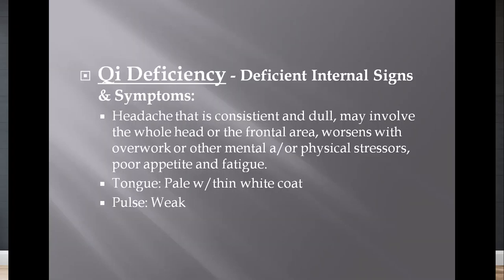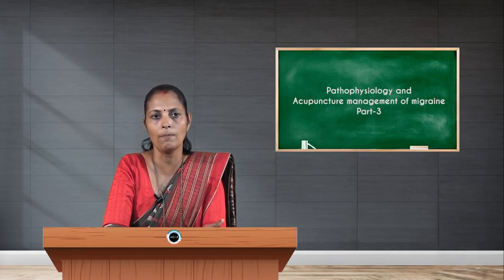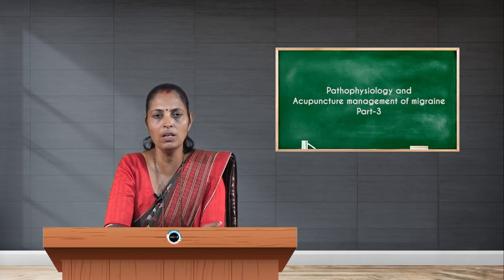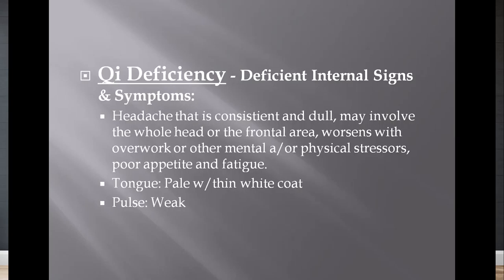Deficiency of chi again leads to deficiency or irregular functioning of all the meridians, leading to irregular functions in the brain area. As the pathophysiology explains, any irregular functions in the cortical region can lead to central sensitization and pain. The headache is consistent and dull in nature, may involve the whole head or sometimes the frontal area, and worsens with overwork or mental or physical stressors. It is associated with general fatigue and poor appetite.